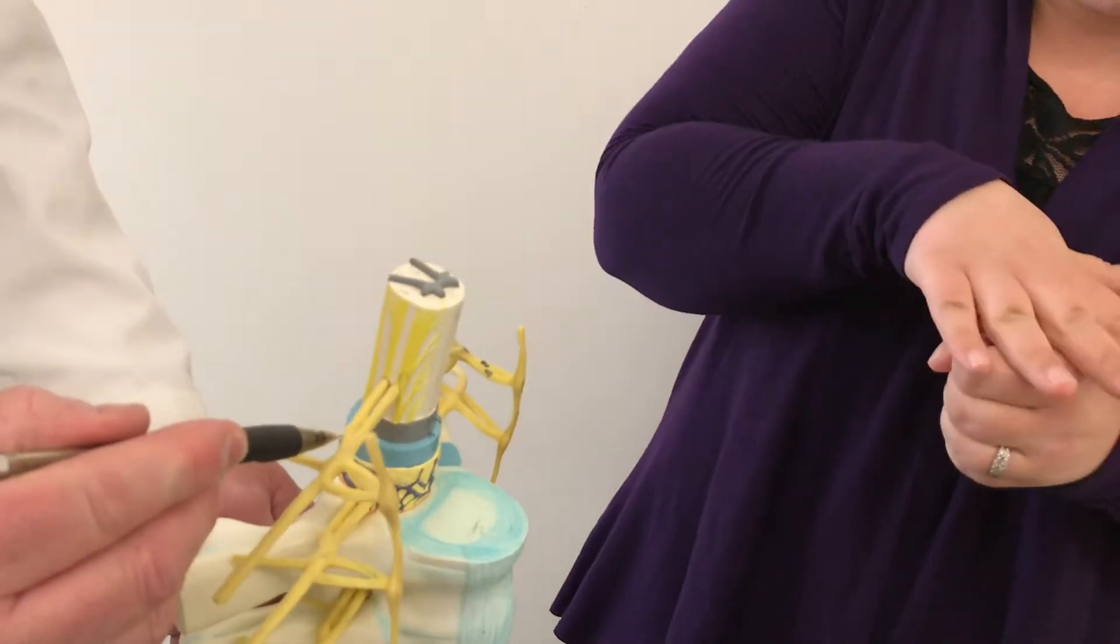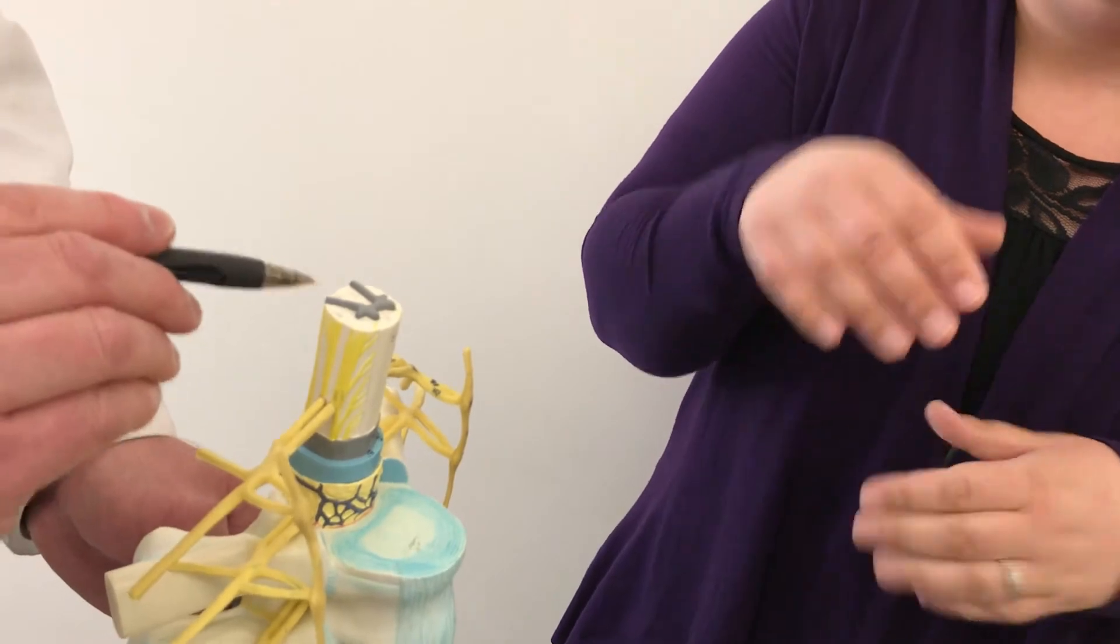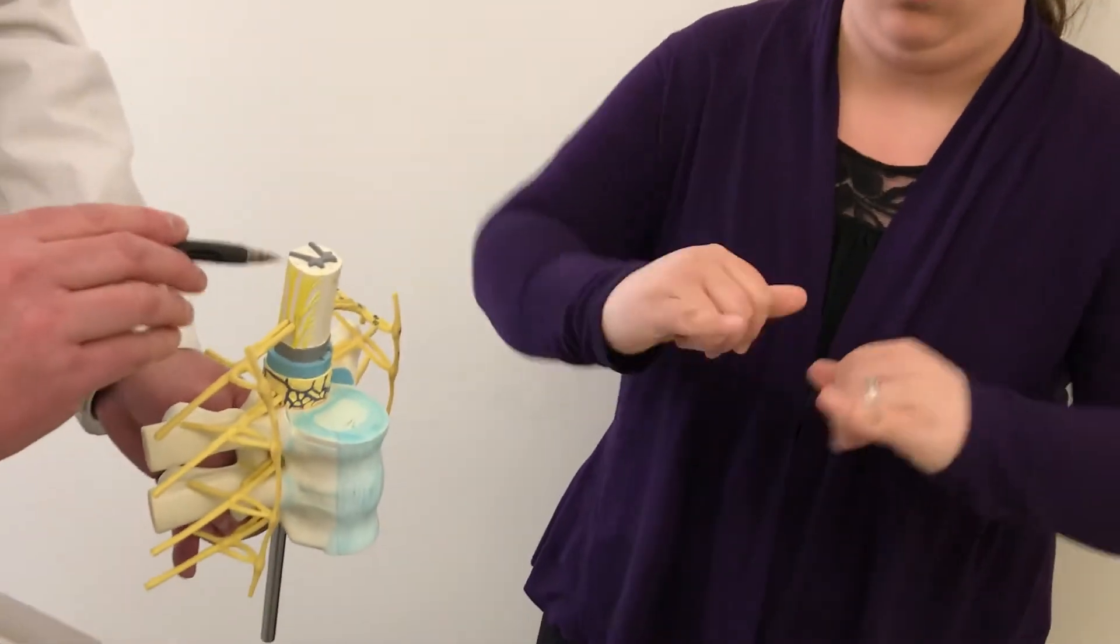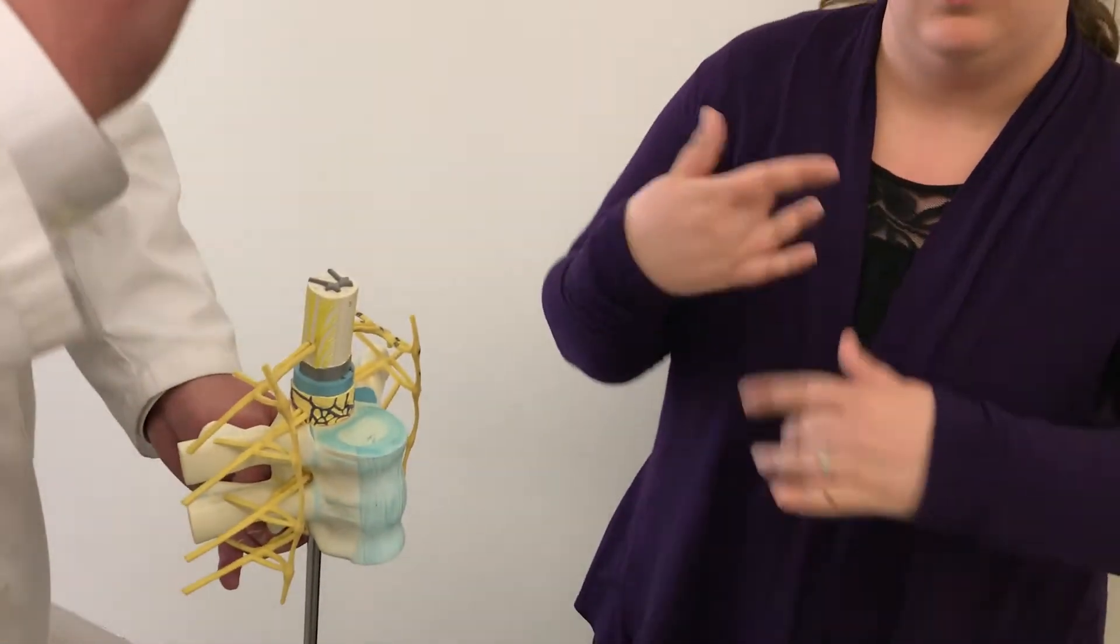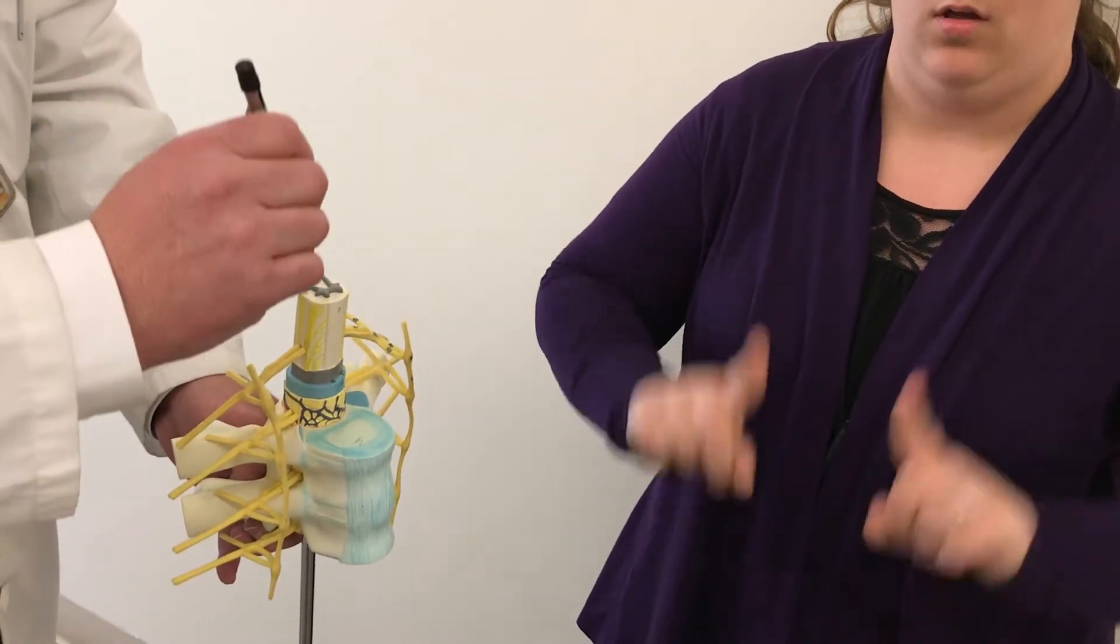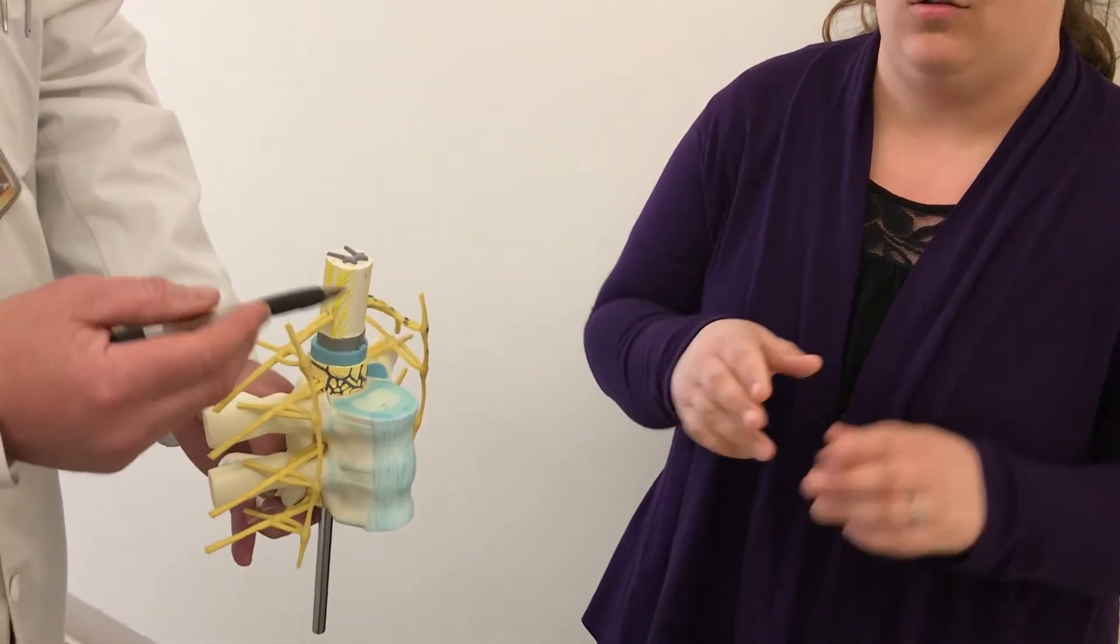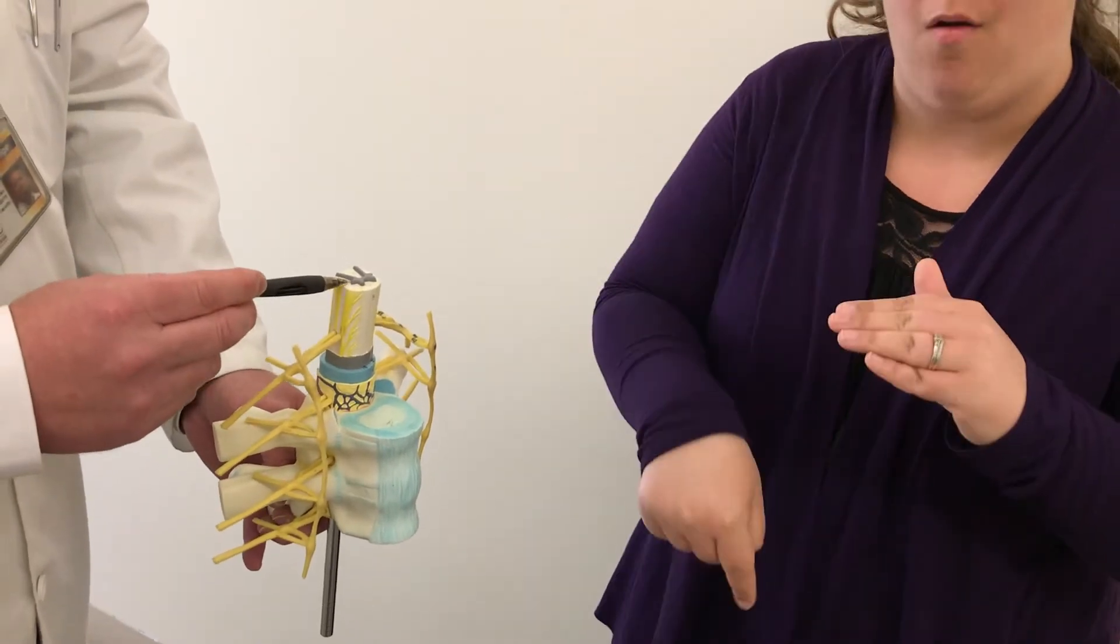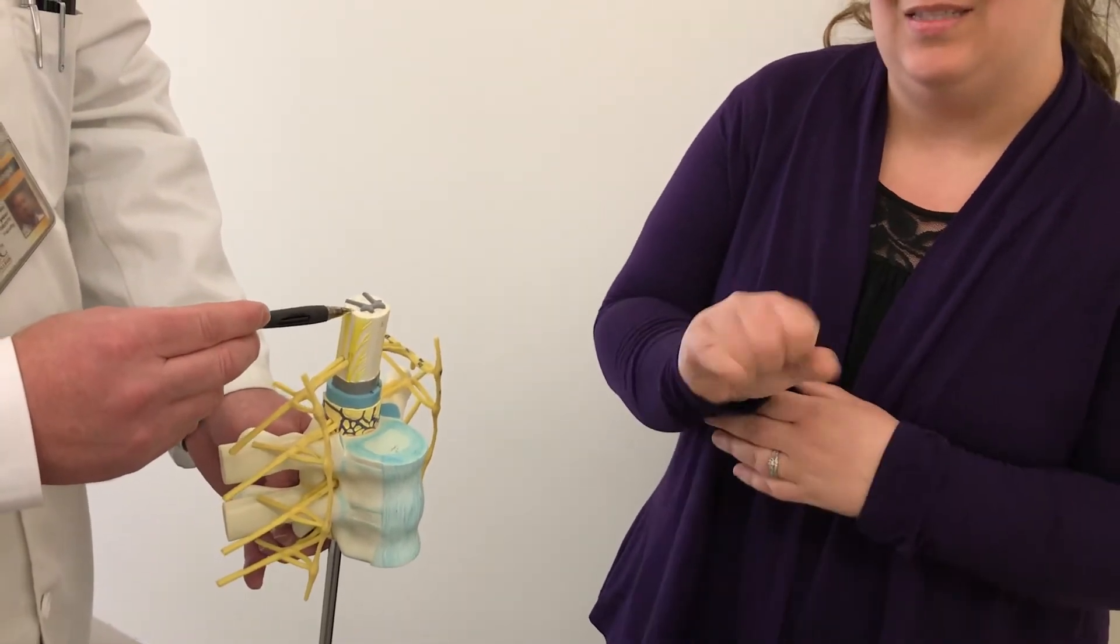The bulb right there, and it's coming into the dorsal horn of the gray matter, usually ascending up into the brain through ascending tracts, and then coming back down and either stimulating an outgoing sympathetic response from the lateral horn